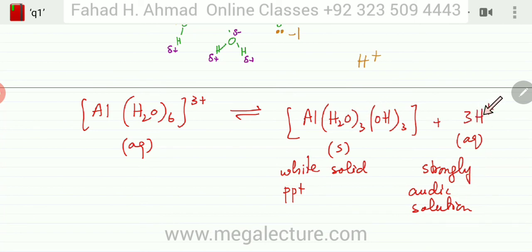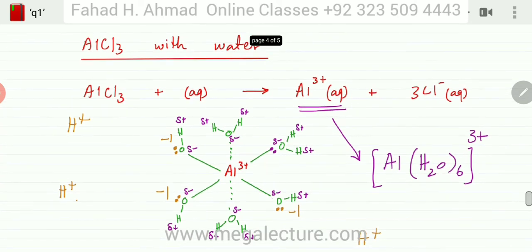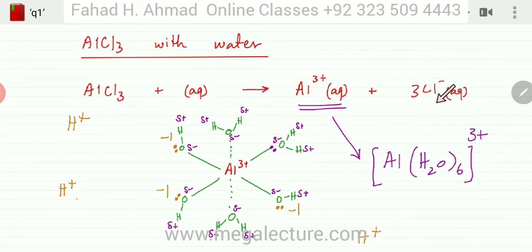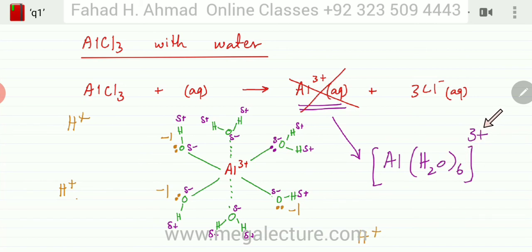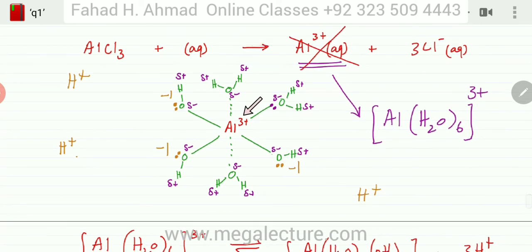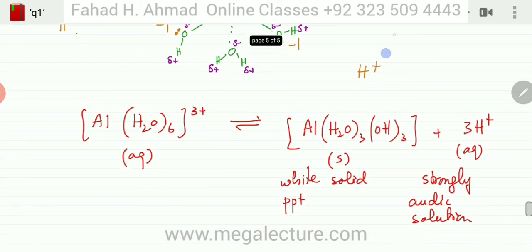This hydrolysis happens very, very strongly, producing a white solid precipitate and a strongly acidic solution. To summarize: the first step is AlCl₃ dissolves in water, and the aluminum ions are completely surrounded by six water molecules to form the [Al(H₂O)₆]³⁺ complex ion. In the second step, the strongly positive aluminum knocks away the positive hydrogens as H⁺ ions, and three hydrogens are lost, yielding a solid precipitate of aluminum hydroxide and a strongly acidic solution.